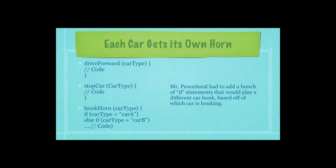So, what happens whenever someone comes in and says, well, I want my car to have a different honking noise than this other car? Well, if you're a procedural programmer, you would go into your honk horn function, as you can see here, and define a whole bunch of ifs.